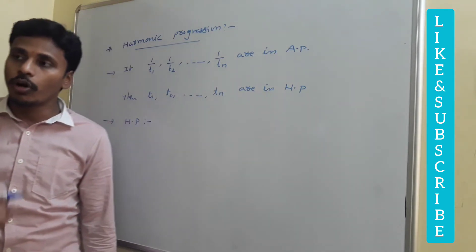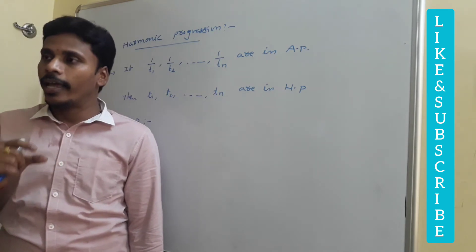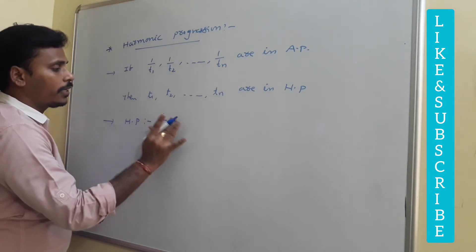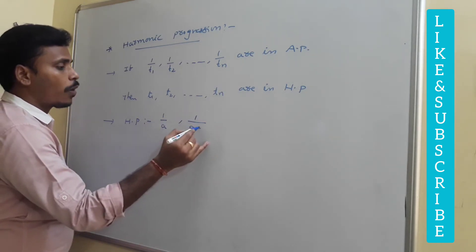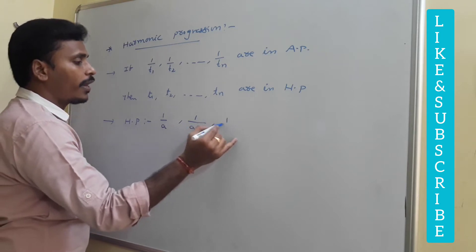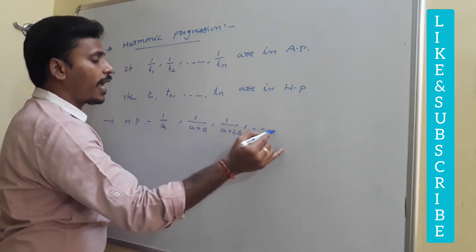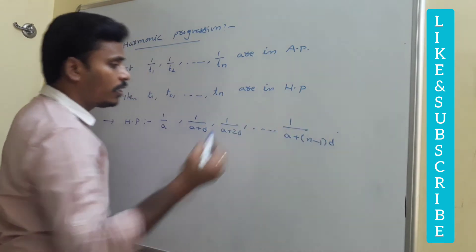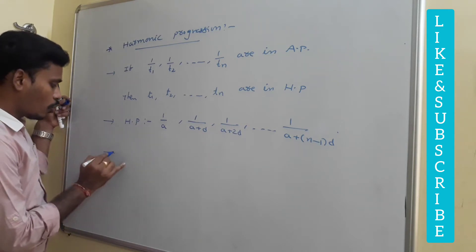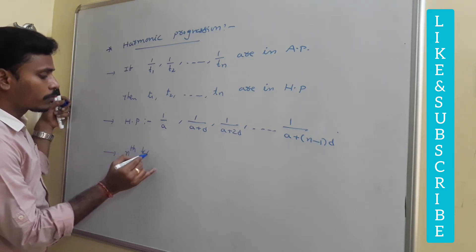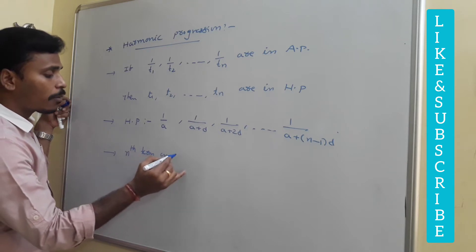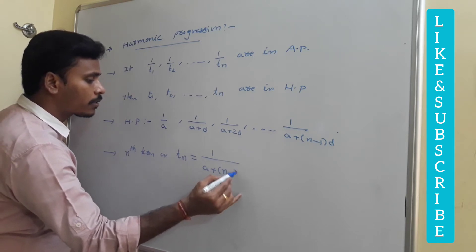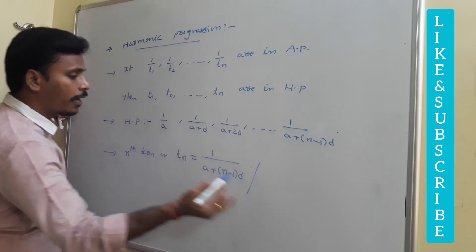We know that the terms of the arithmetic progression are of the format a, a+d, a+2d, then the terms of the harmonic progression are of the format 1/a as the first term, then 1/(a+d), then 1/(a+2d), and continuing: 1/(a+(n-1)d) is the nth term of the harmonic progression. So the nth term or general term of the harmonic progression is represented by tn, given by the rule 1/(a+(n-1)d).